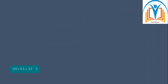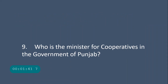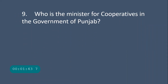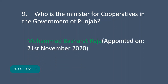Question number seven: through which amendment was the cooperative department declared a provincial subject? It was the 18th Amendment, and it was passed in 2010. Question number eight: the Cooperative Training College was established at Faisalabad in 1960.